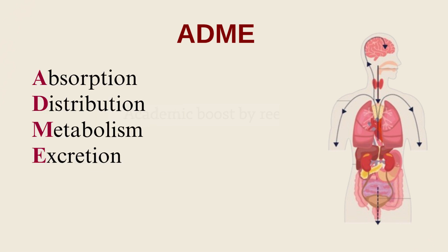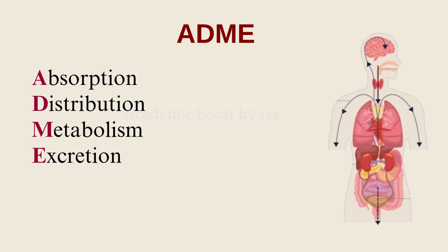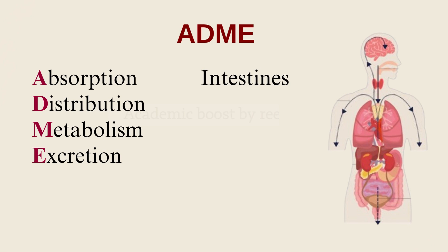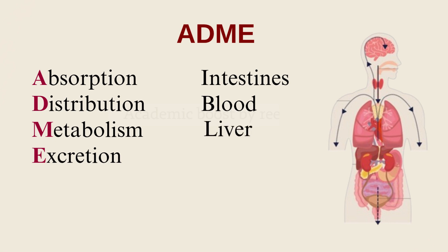Each of the principles occurs mainly in certain body parts, but that doesn't mean it's not happening in any other places. Whenever we think of absorption, we think about the intestines. Distribution — we're thinking about blood. Metabolism — about the liver. And excretion — we're thinking about the kidneys.